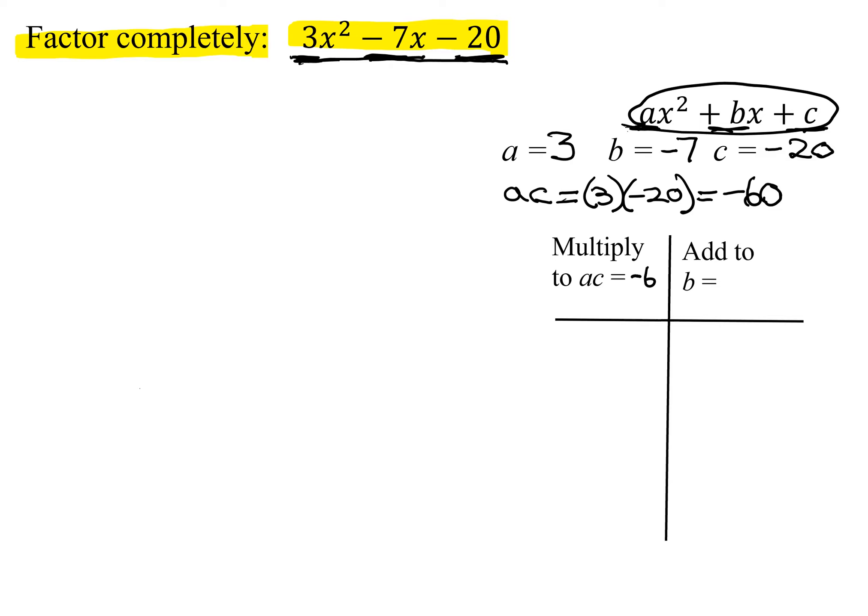I need two numbers that multiply to negative 60 and add to b, that is negative 7. If these numbers come to you very quickly, fine, but if you're having trouble coming up with these numbers, there is a systematic method you can use to find them.